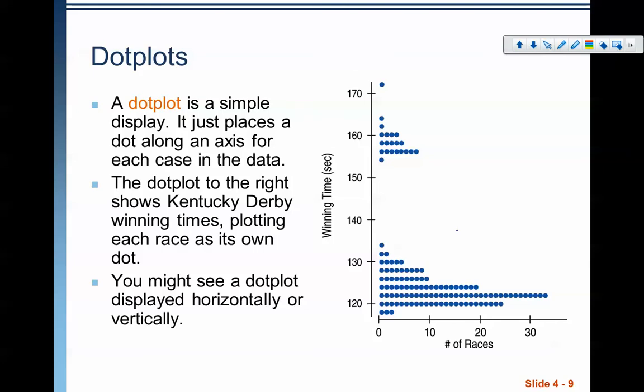Finally, we have dot plots. Now, you'll notice that a dot plot is very similar to a histogram. Again, it preserves the shape. Unlike a stem and leaf plot, though, instead of using the numbers to create the shape, it's just using dots.